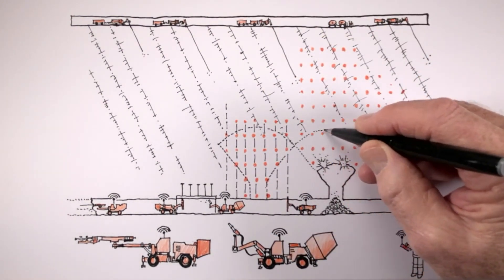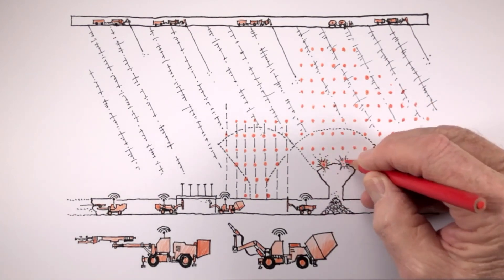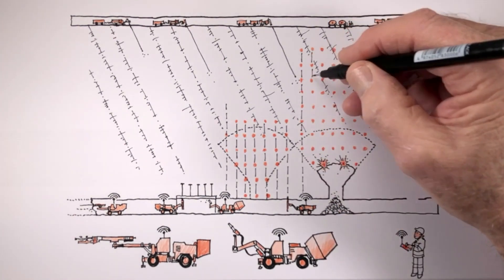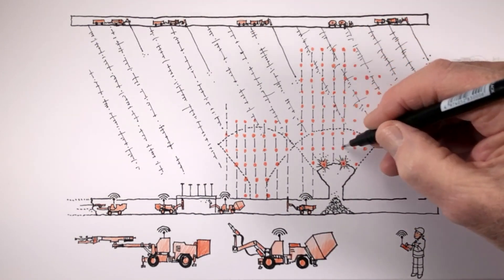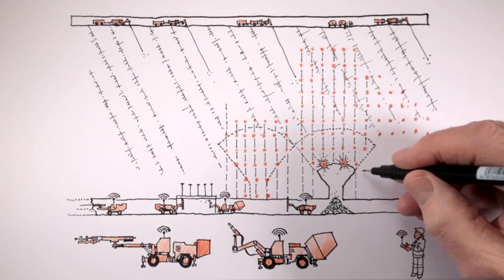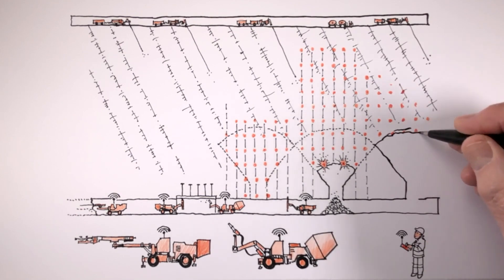The ability to place wireless charges high into the ore body from the extraction level and to detonate precisely when desired means there is no longer any need for a costly undercut level to initiate cave propagation.